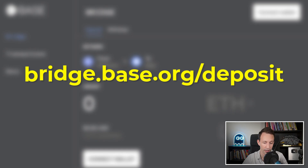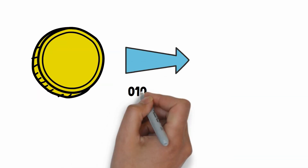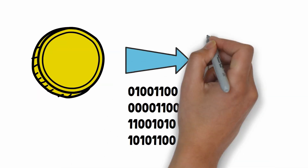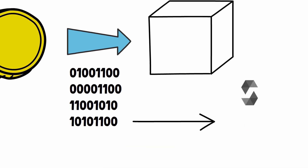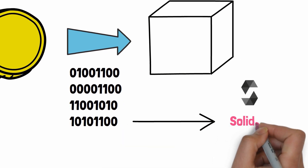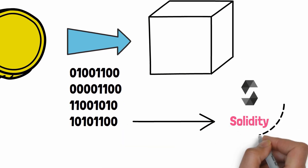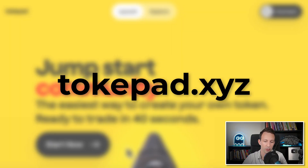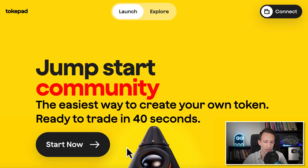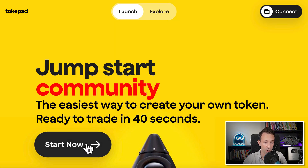Here is the URL. In the next step, you have to create the code of the token. Technically, a token is a small program on the blockchain, coded with the programming language called Solidity. If you don't use any tool, creating a token requires a good knowledge of Solidity. But with Tokpad, you don't have to worry about this, since it will create the token for you. To use Tokpad, you go to this URL, then you click on Start Now.